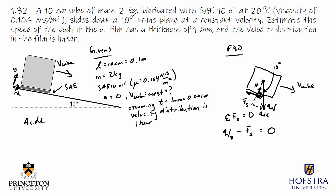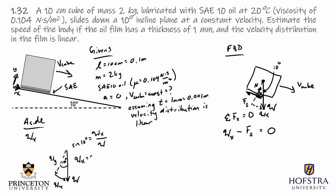To find the weight component in the x direction, I draw the triangle: the weight acts downward and decomposes into x and y components. The sine of 10 degrees equals the opposite side W_x over the hypotenuse W, so the component of weight in the x direction is W times the sine of 10 degrees.